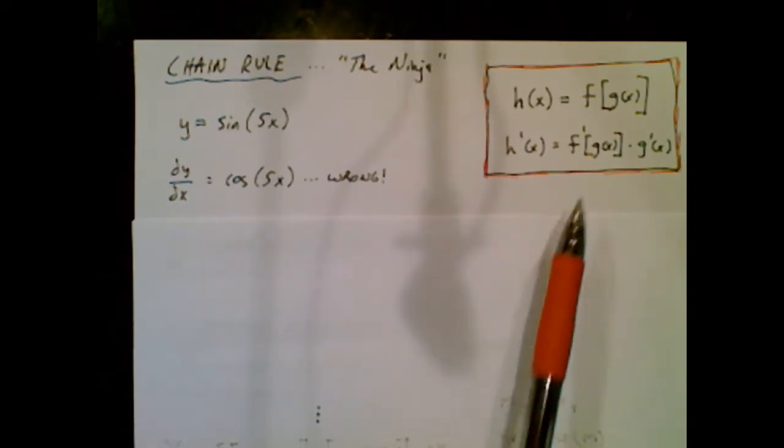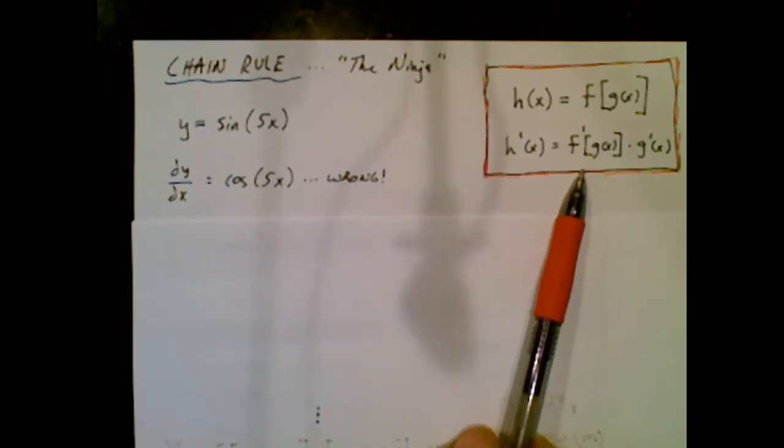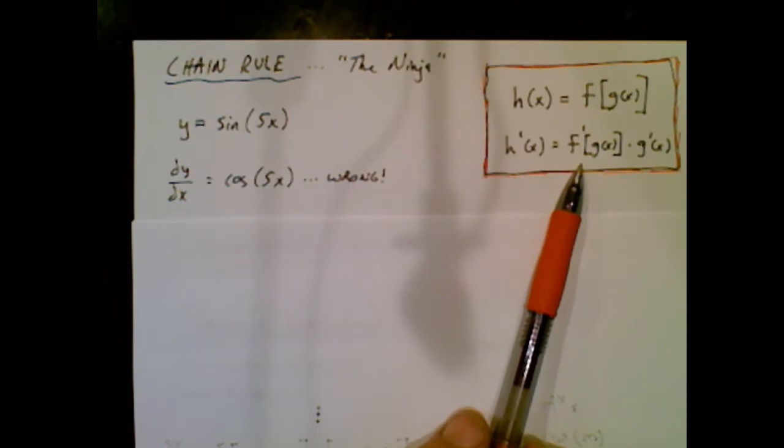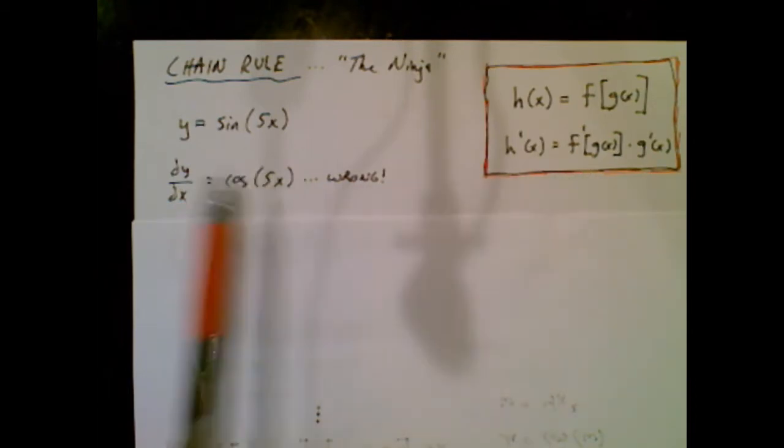If you look over here on the right, you see the chain rule in calculus symbolism. So let's ignore that and pretend that didn't even happen. Let's go look over here.